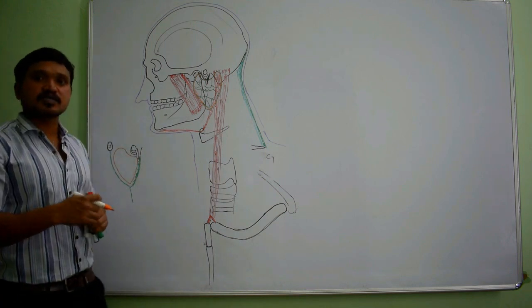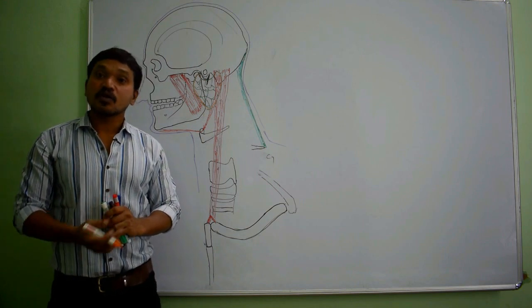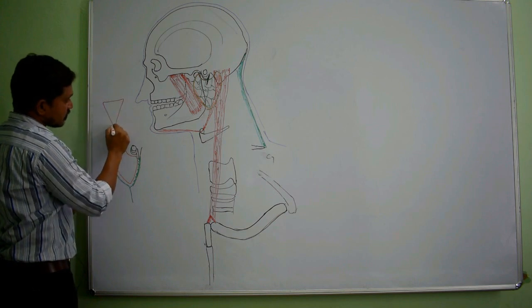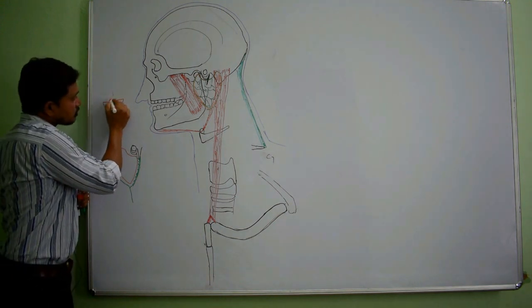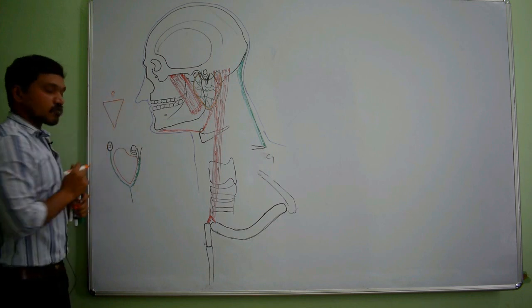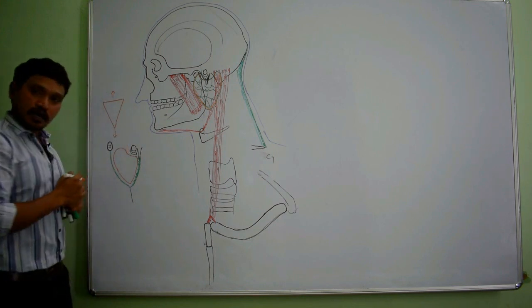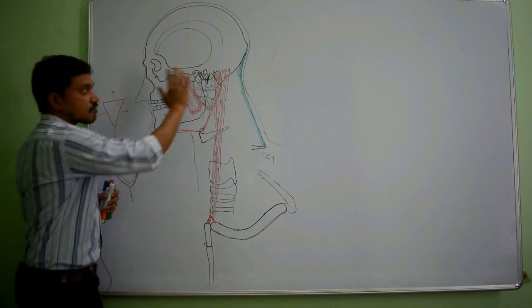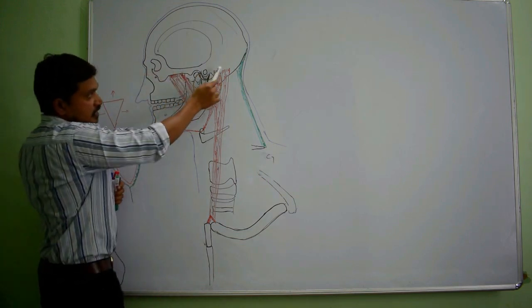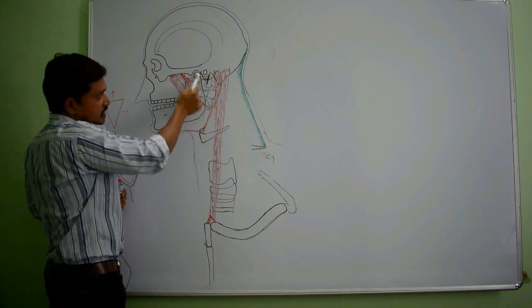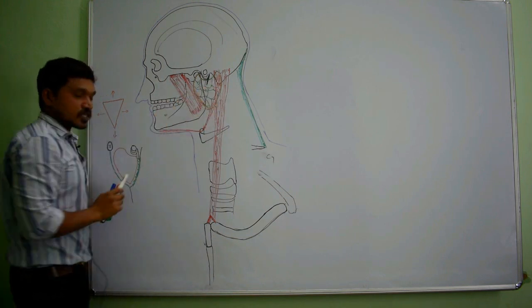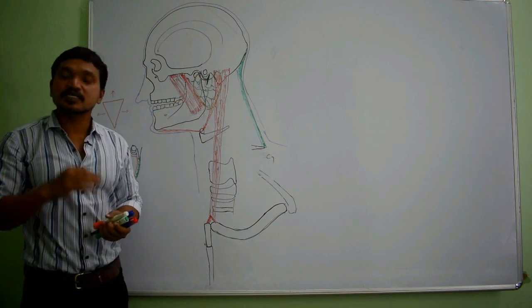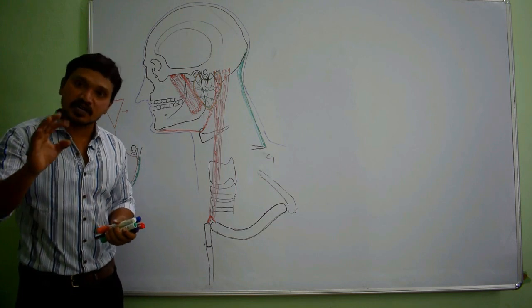The parotid gland weighs around 25 grams and is inverted pyramid in shape — the base is directed upwards and the apex is directed downwards. It has an anterior border and a posterior border. From the surface view it looks pyramidal, and in transverse section it is also pyramidal or triangular in shape. Anteriorly the ramus of the mandible is present, posteriorly the mastoid process, and the gland is invaginated deeper between these two structures.